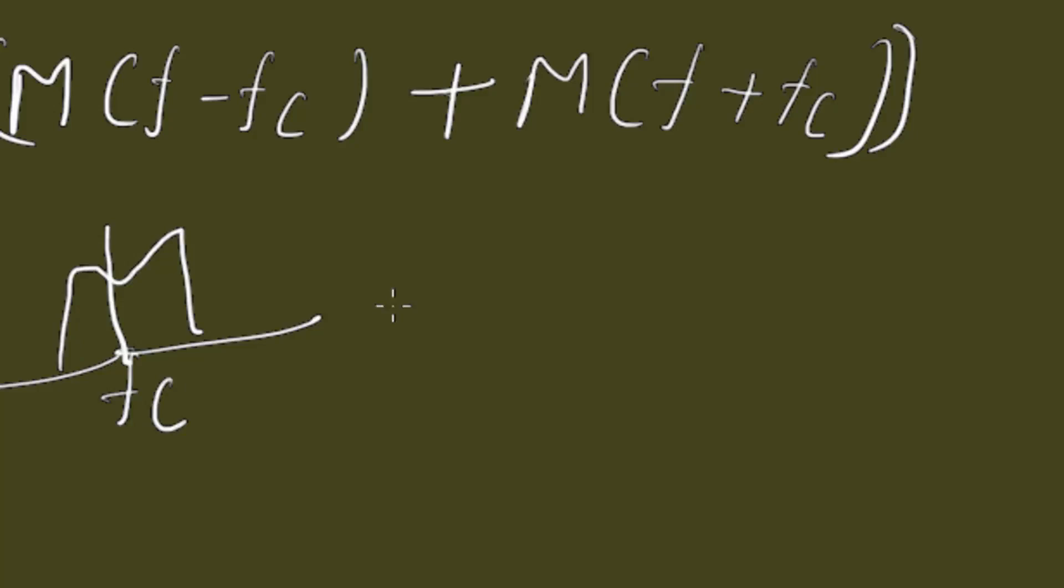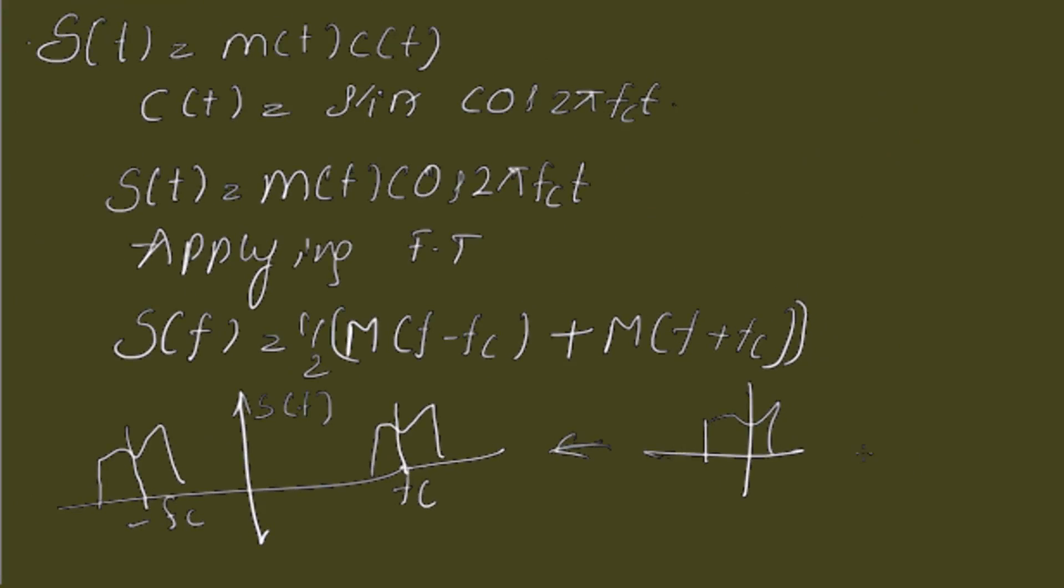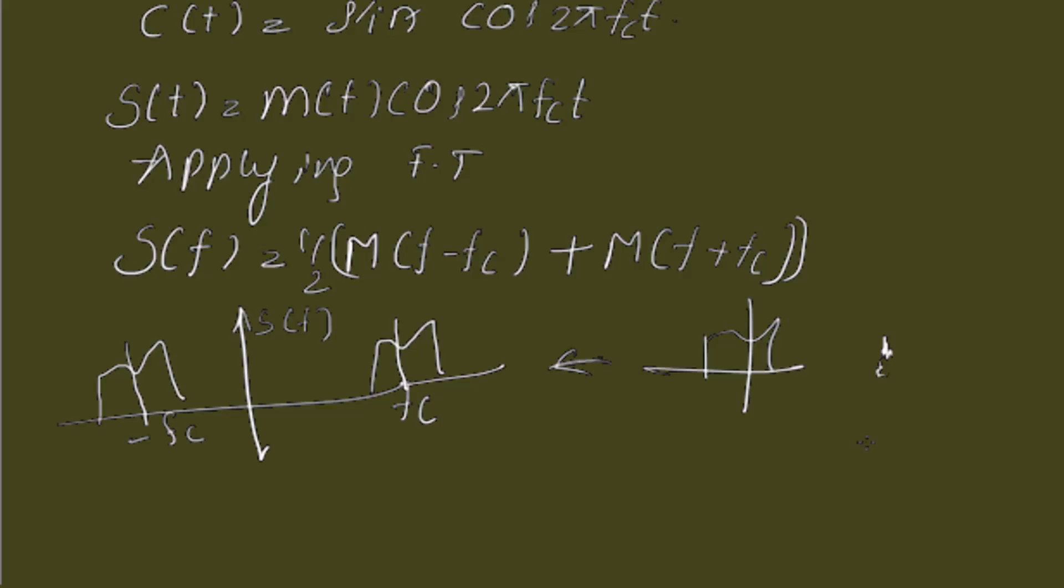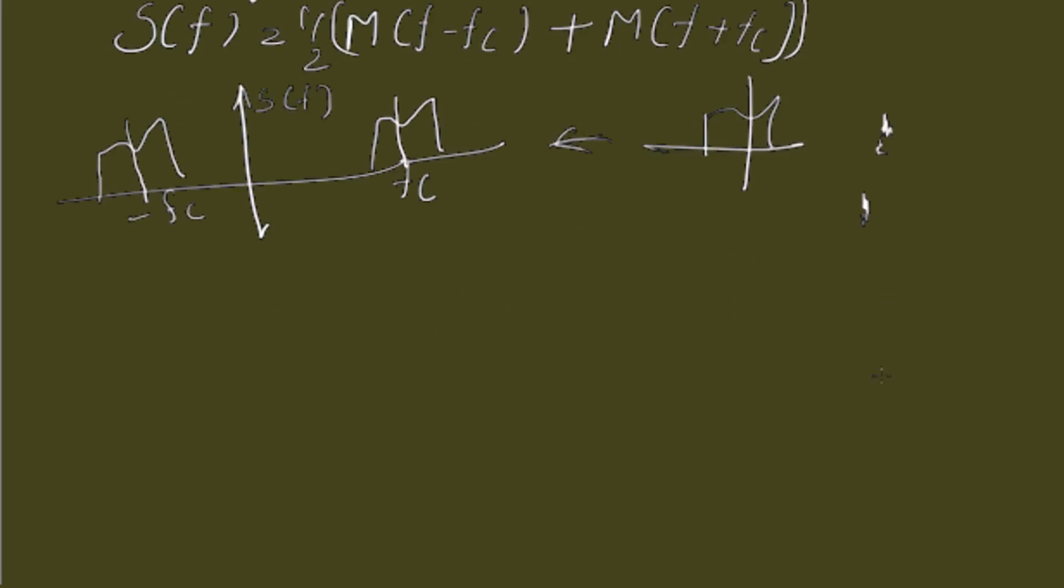So, when we do the modulation, the spectrum which is actually like this, will be shifted to plus fc units and minus fc units and the amplitude becomes half of the virtual value. This is called DSP signal.